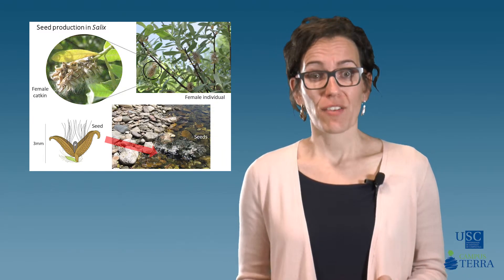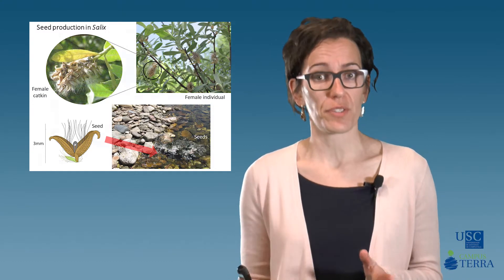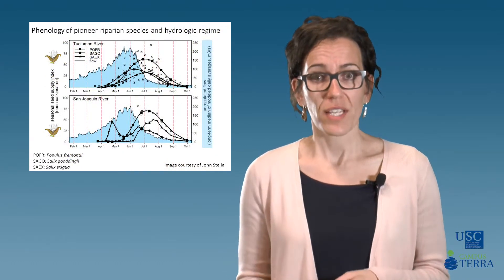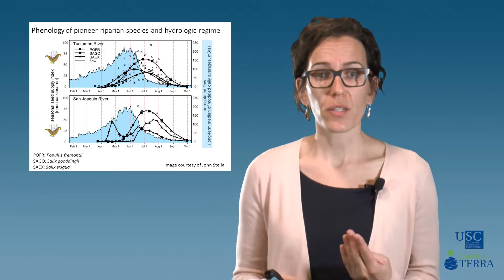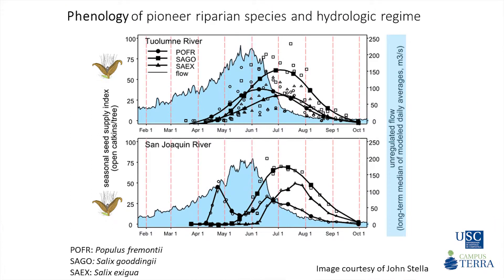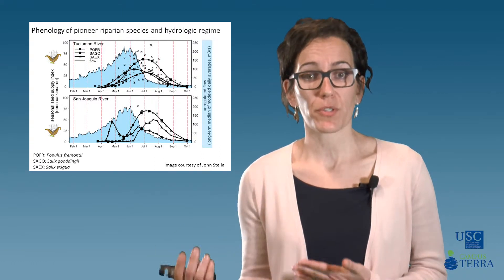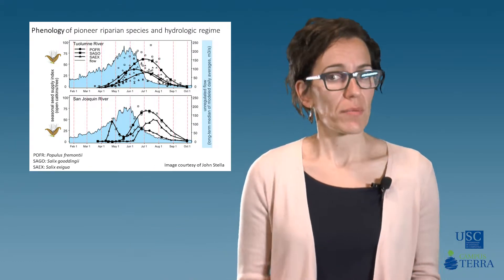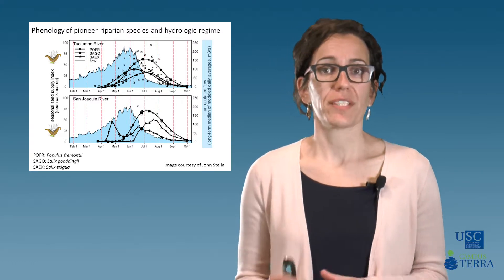Salicaceae species have been found to have their phenology synchronized with the hydrologic regime. This graph illustrates the propagule availability quantified for three woody species growing in riparian stands. The blue area shows the temporal variation in mean daily discharge along the year, while the three lines represent changes in the fecundity index per tree. We can observe that propagule availability was maximum shortly after the annual floods.